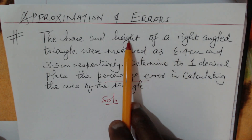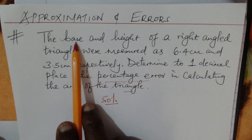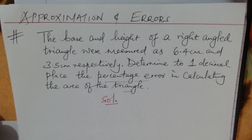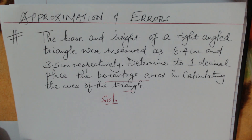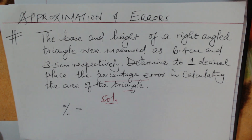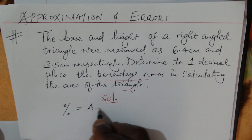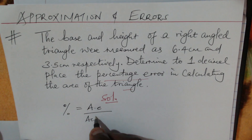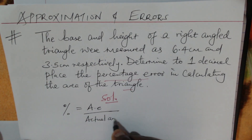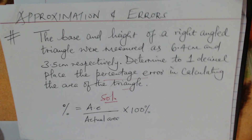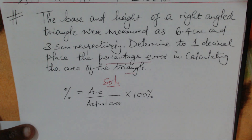You are given the base as 6.4 and the height as 3.5. To find the percentage error in calculating the area of this triangle, the percentage error is given by: absolute error in finding the area of the triangle, divided by the actual area of the triangle, then multiplied by 100%.